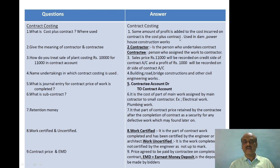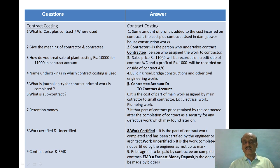The meaning of contractor and contractee: a contractor is a person who undertakes the contract, while a contractee is a person who assigns the work to the contractor.